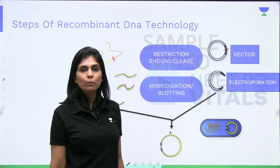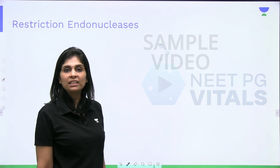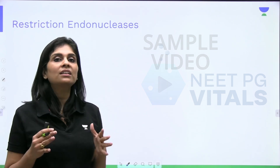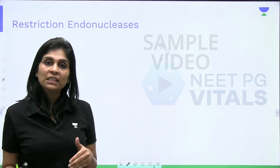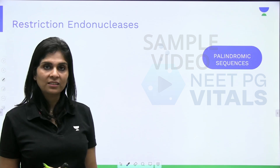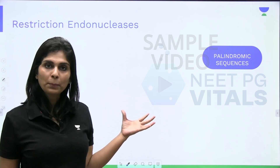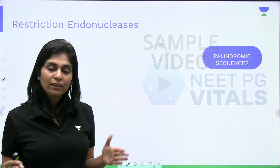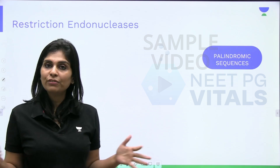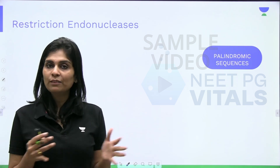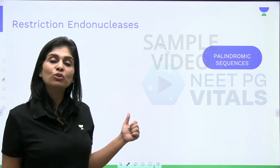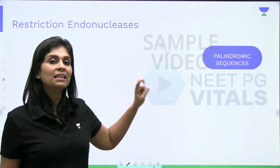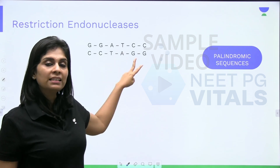Now let's understand all these tools one by one. The first one is restriction endonucleases. Restriction endonucleases are enzymes which cut at restricted, specific sites, and those sites are always palindromic sequences. What is a palindrome? In literature, a palindrome is a word or phrase which has the same meaning when read from either side — for example, 'rotor' or 'manorama', read from either side it's the same.